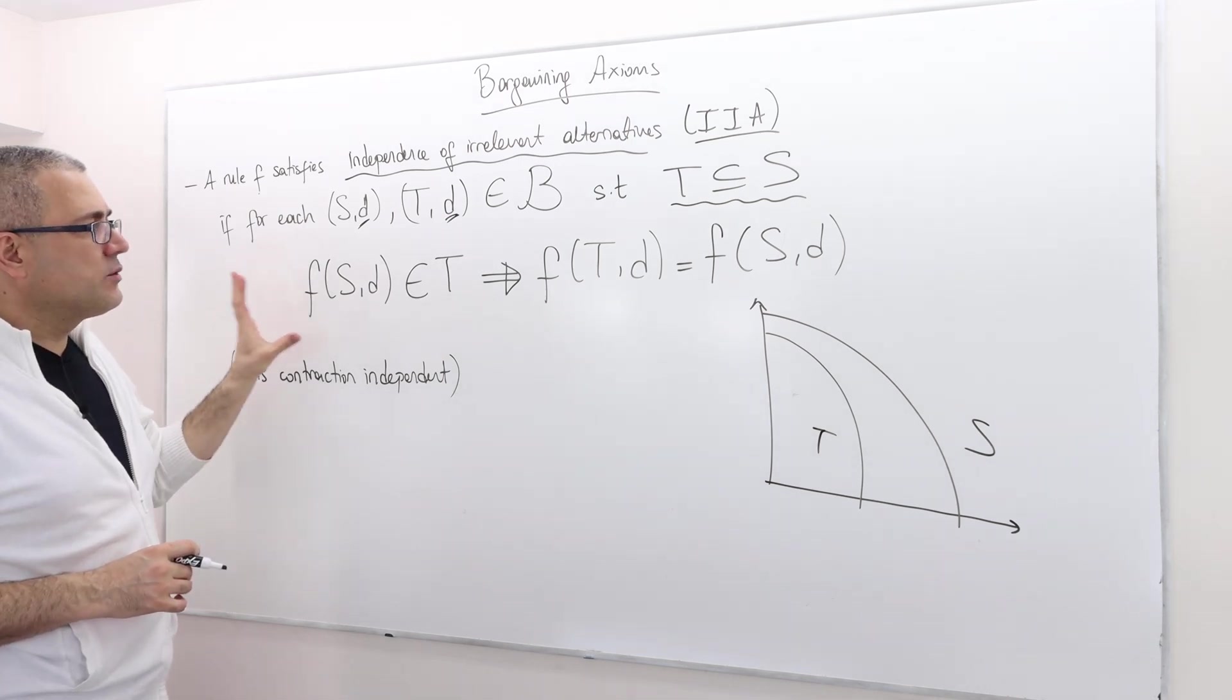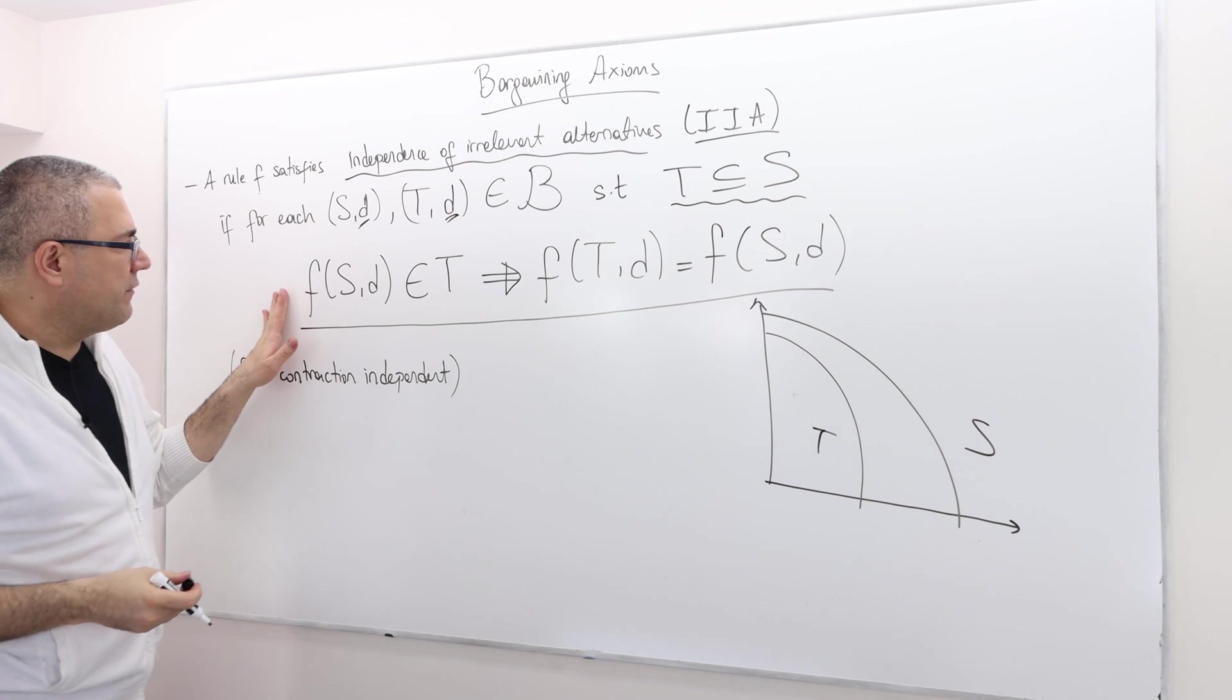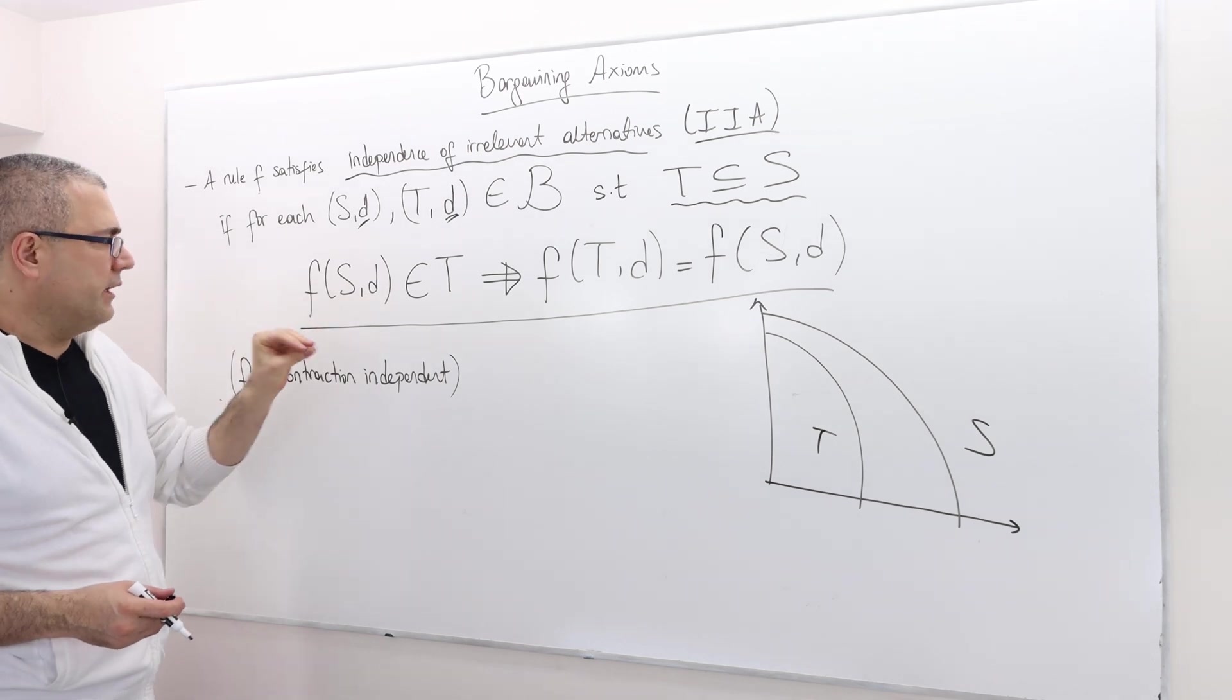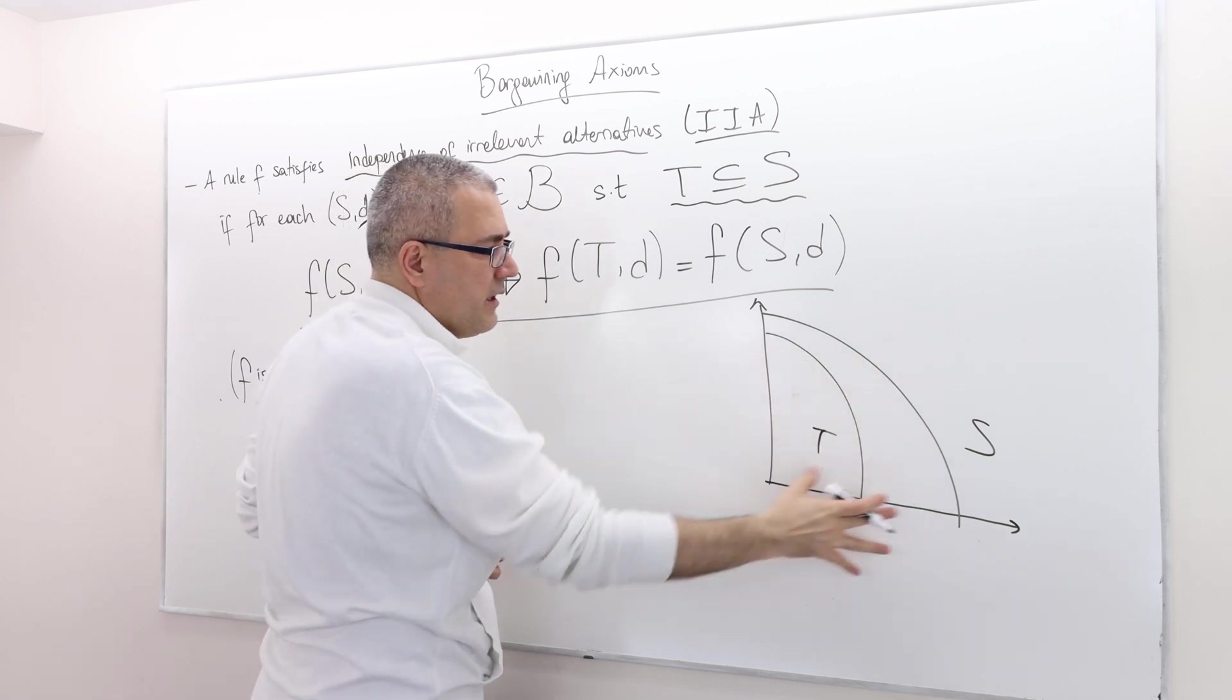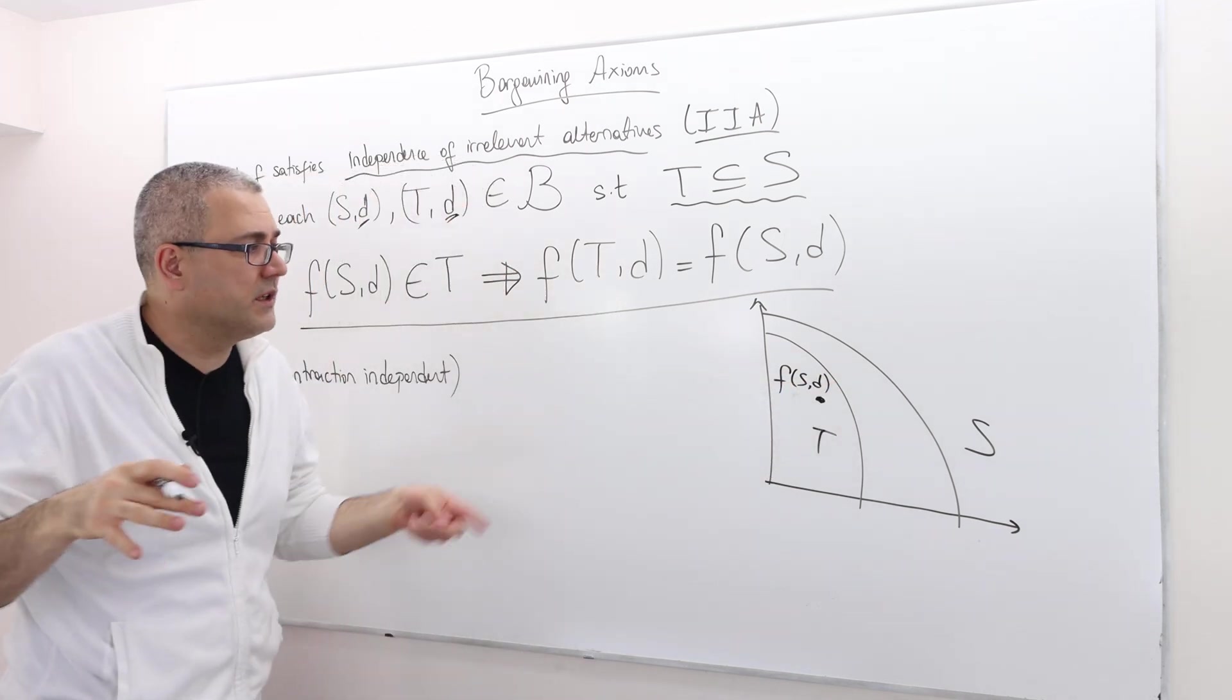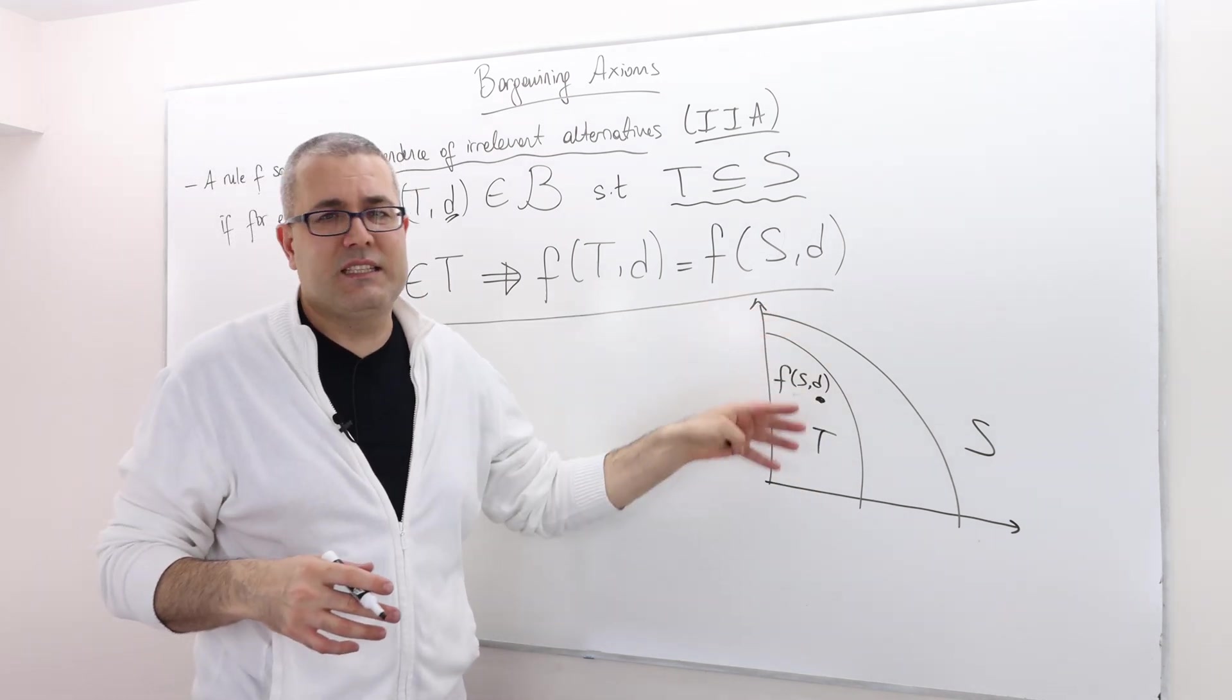Here's what should happen if—remember, this is an if-then statement. If the bargaining rule gives some value in this set, pick some value in this set which is in T, for example, this one is F(S,d). Let's suppose, is it efficient? Clearly it's not. But let's suppose it gives me some point inside this set T.